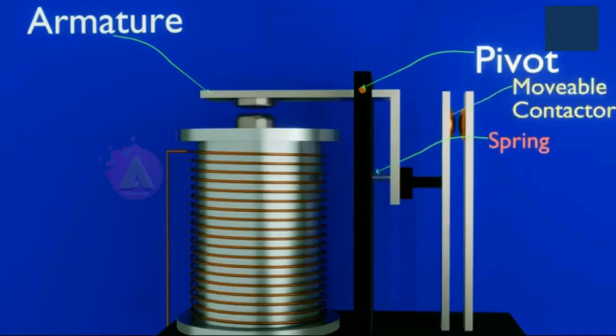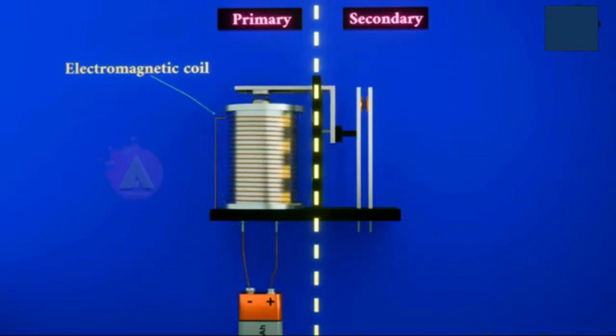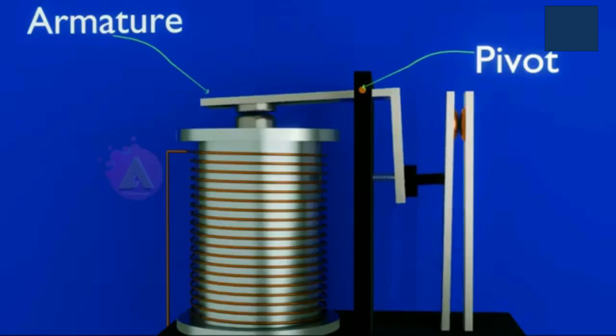As the armature moves, it either closes a normally open or NO contact, or opens a normally closed or NC contact, thereby switching the connected load current.